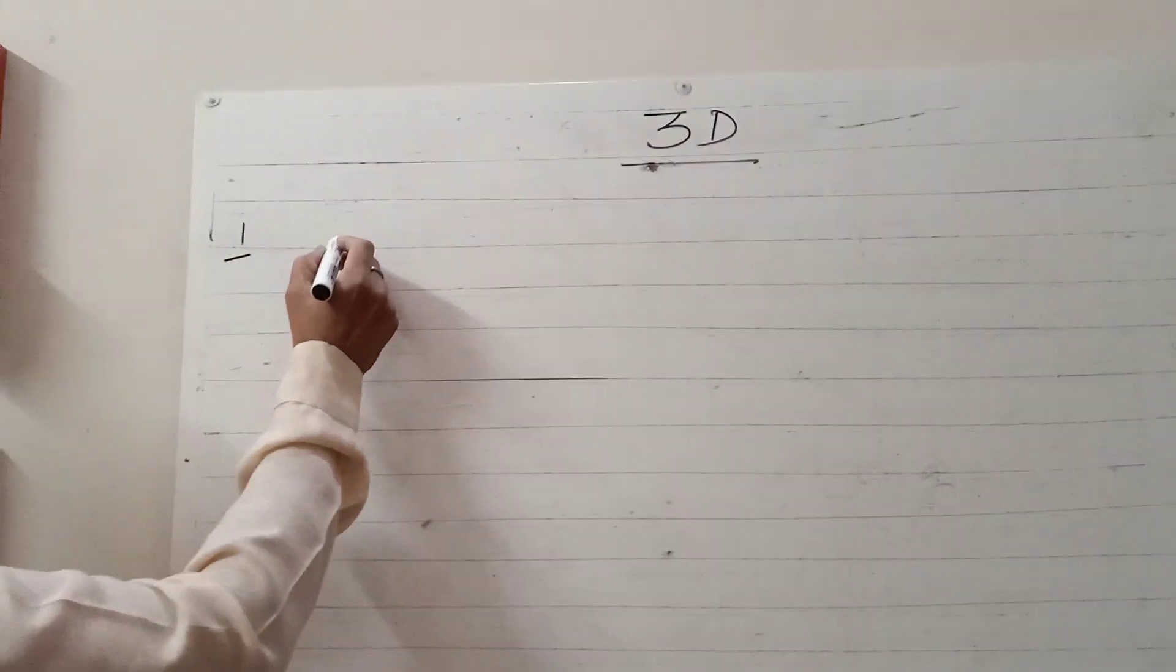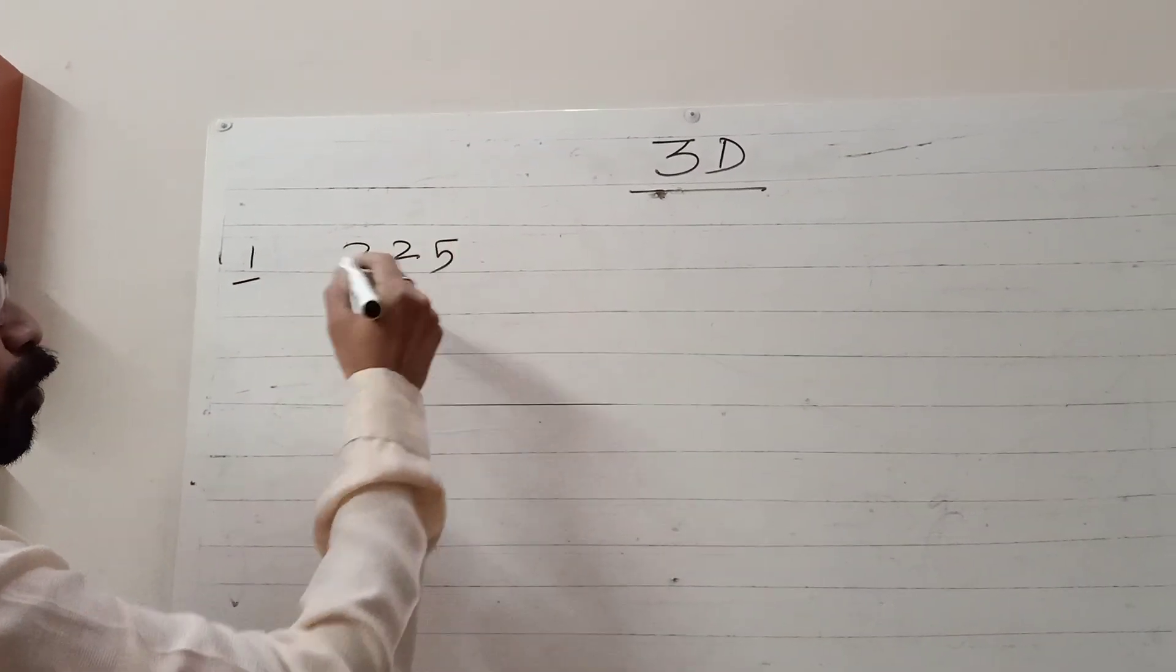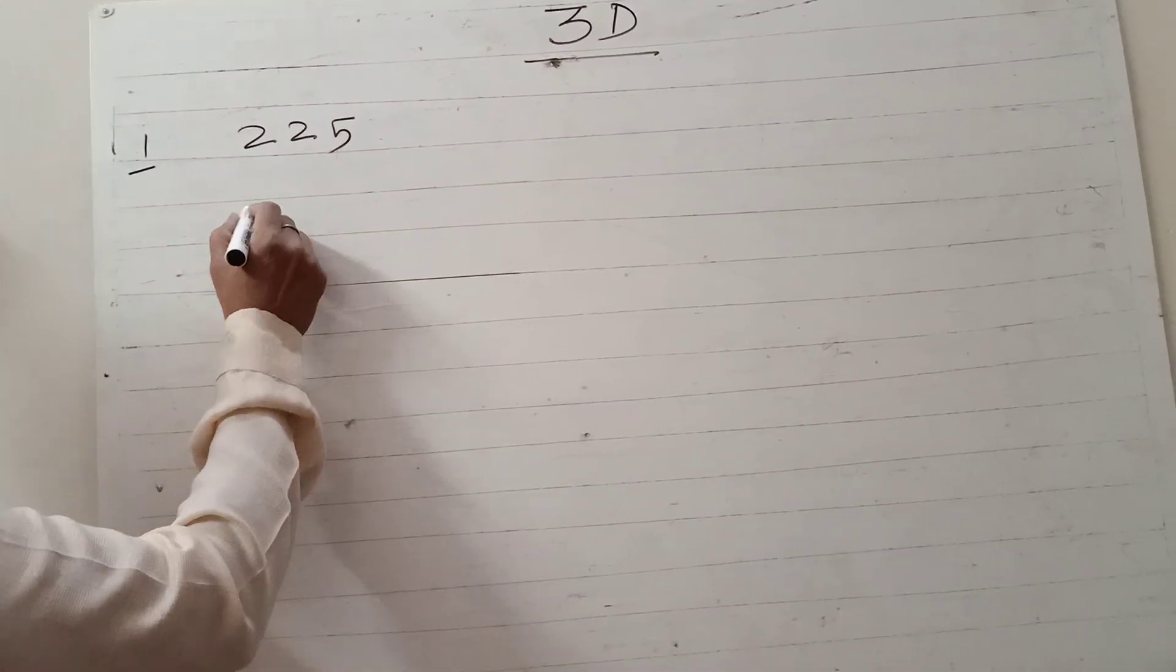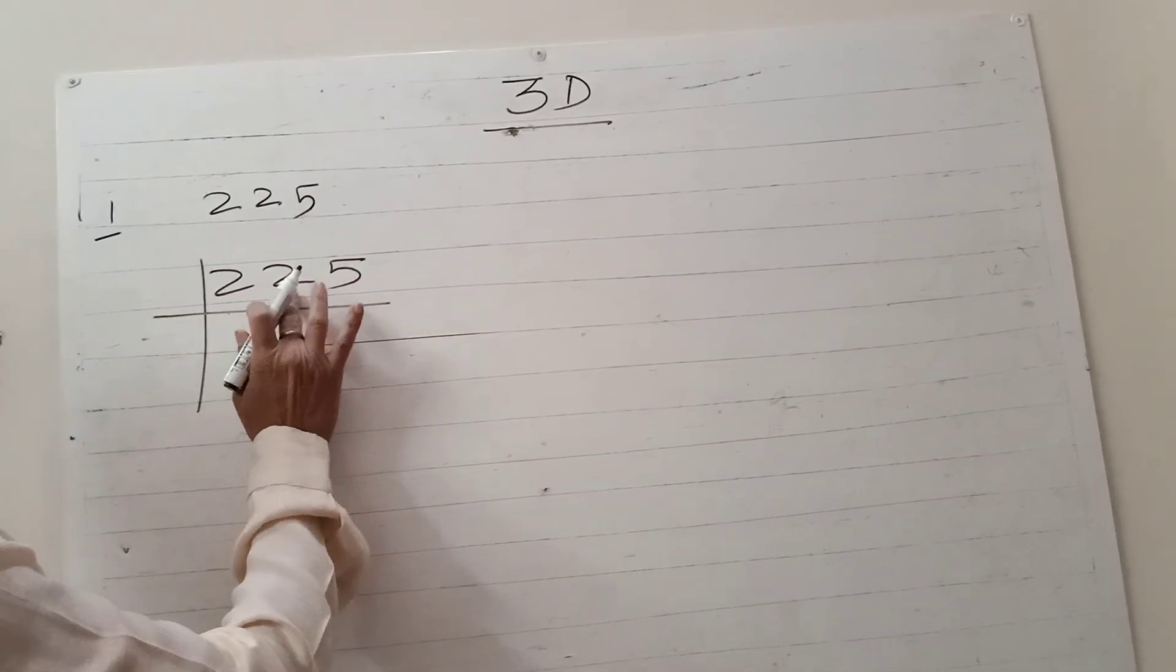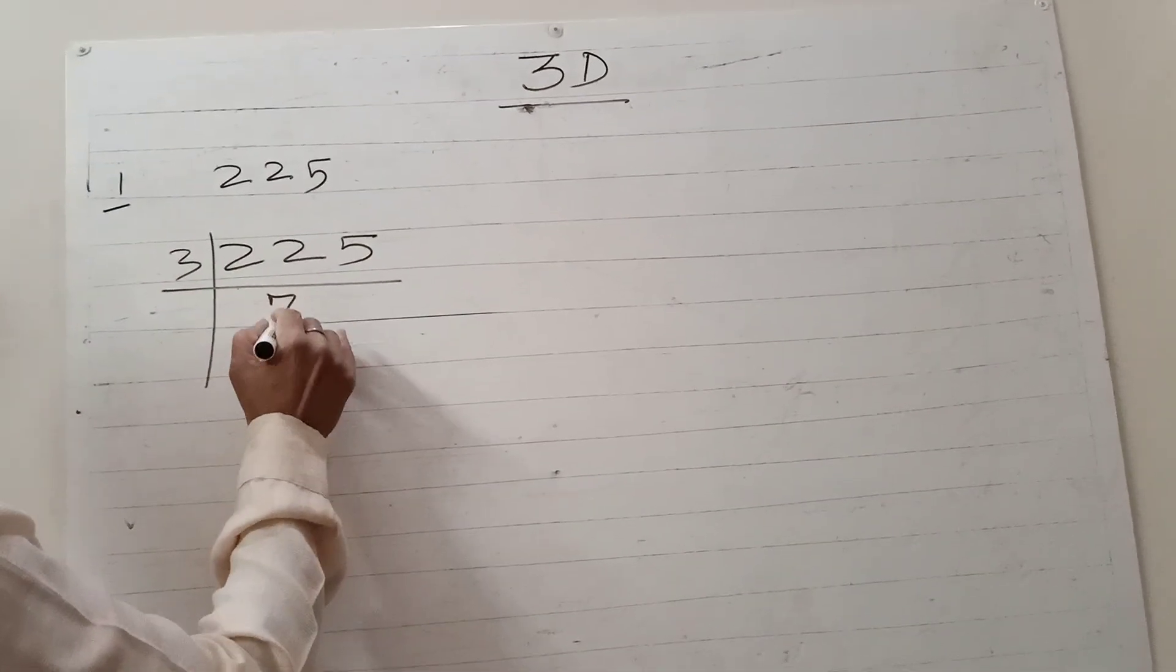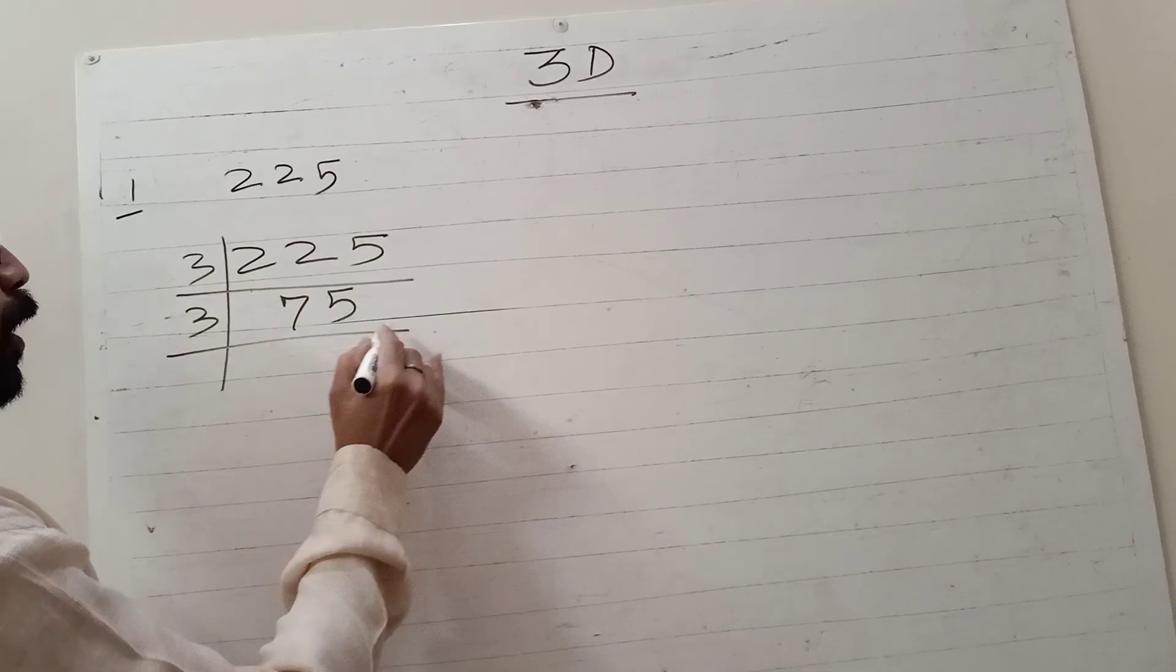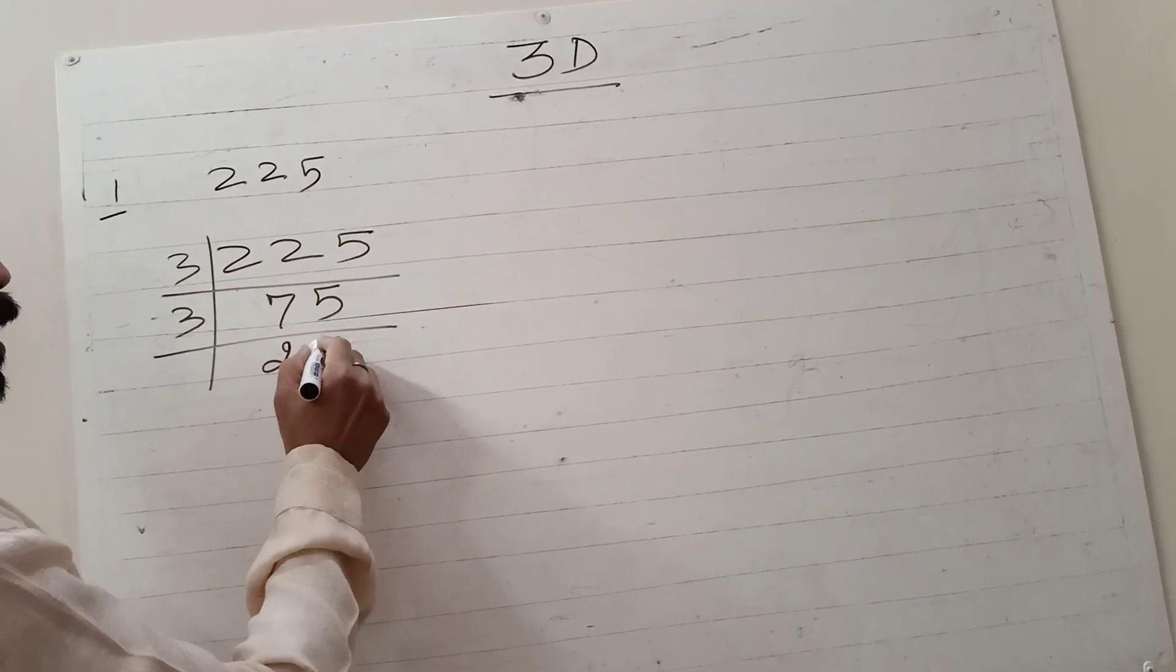This is question 3D, the fifth question: 225. You are knowing about the prime factorization method, so we are not going to discuss more about prime factorization. We are going to start with prime factorization. 225, it is divided by 3: 3 goes into 225 to get 75. 3 goes into 75 to get 25.